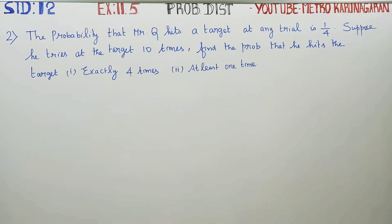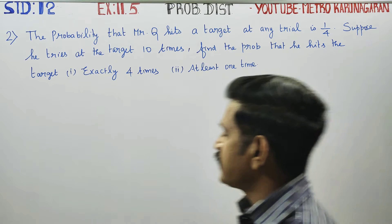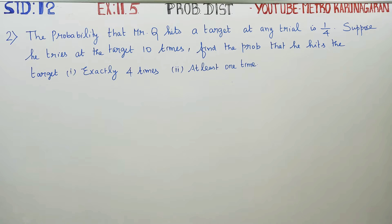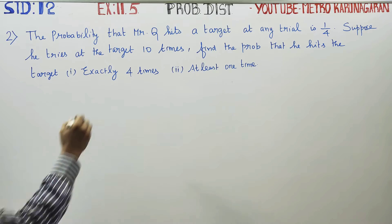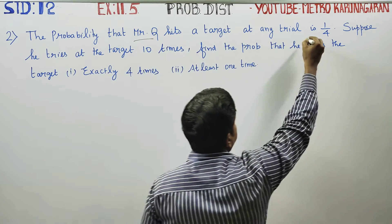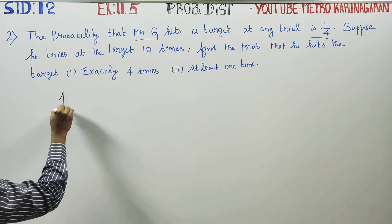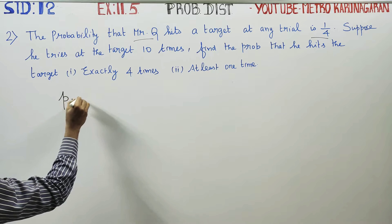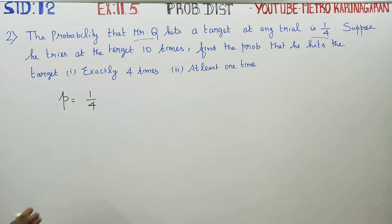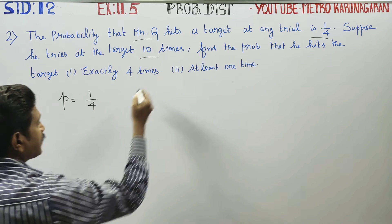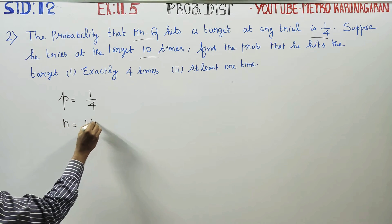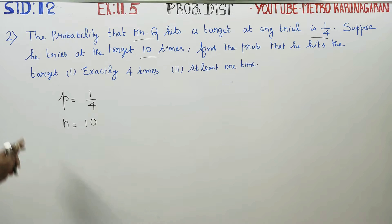Dear 12th standard students, in probability distribution, exercise number 11.5: the probability that Mr. Q hits a target at any trial is 1 by 4. So Q can hit the target 100 times. Success is a problem — success is the probability of small p, which is 1 by 4. He tries at the target 10 times, this is n. Find the probability he hits the target exactly 4 times and at least 1 time.